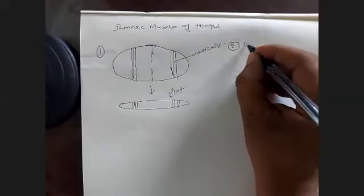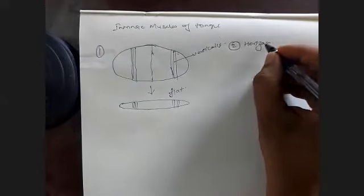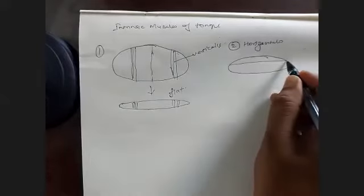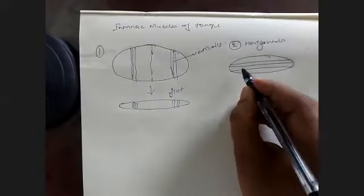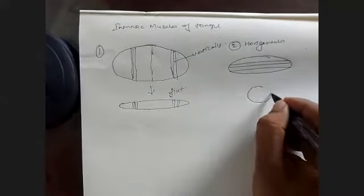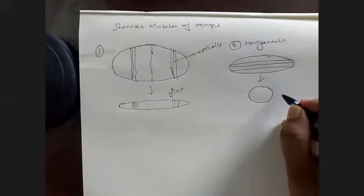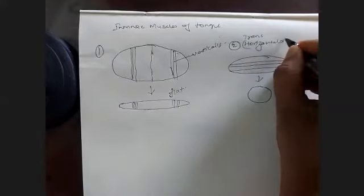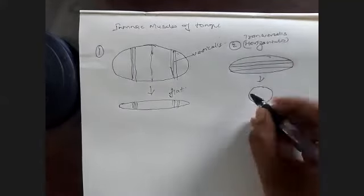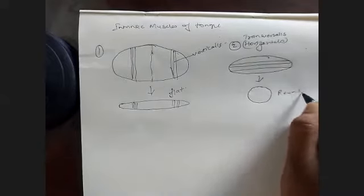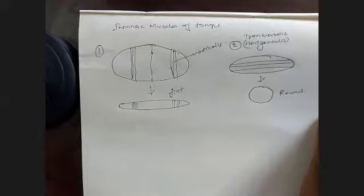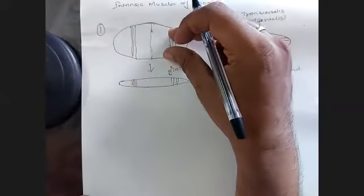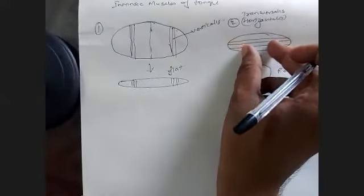The second intrinsic muscle is the horizontally running transversalis muscle. Its fibers run horizontally. Whenever it contracts, the tongue becomes round. So verticalis makes the tongue flat, and transversalis makes the tongue round.